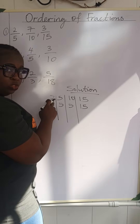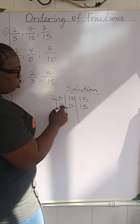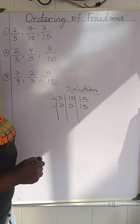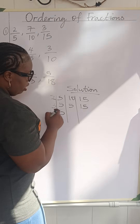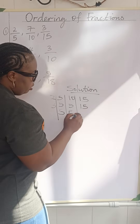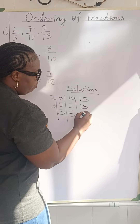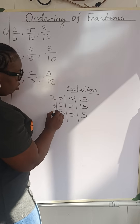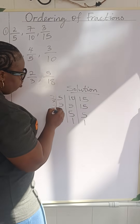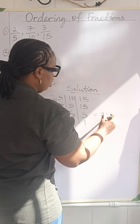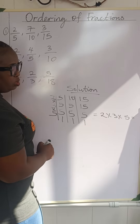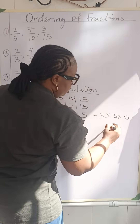We are using primes. After 2, the next smallest prime is 3. Three going into 15 is 5. We bring down 5 and 3 since they are prime and 3 cannot divide 5. Then we use 5: 5 goes into each once, giving 1, 1, and 1. So we multiply: 2 times 3 times 5. Two times 3 is 6, and 6 times 5 is 30.